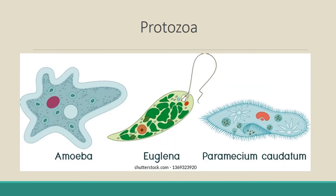The next group is protozoa. They are unicellular and belong to the animal group. They cannot prepare their own food — they have heterotrophic nutrition. The most common examples of protozoa are amoeba, euglena, paramecium, etc.